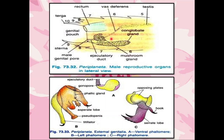When we dissect the cockroach and observe the lateral view of the male reproductive organs, we can see the external genital organs. The tergum is the dorsal side and the sternum is the ventral side. The male genital pore opening is here, with the genital pouch below it, and the rectum of the digestive canal is also visible. The mushroom gland is present, with the ejaculatory duct below it. A tubular structure representing the vas deferens is seen, and the pair of testes is present at the top.